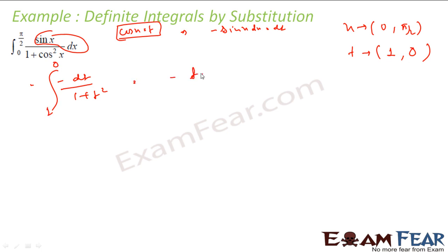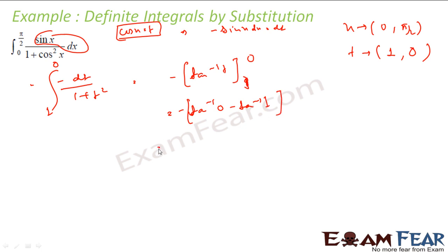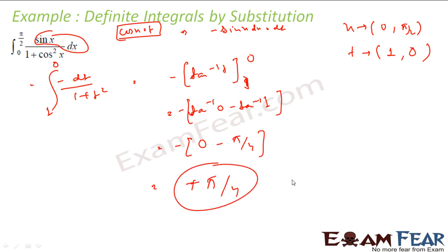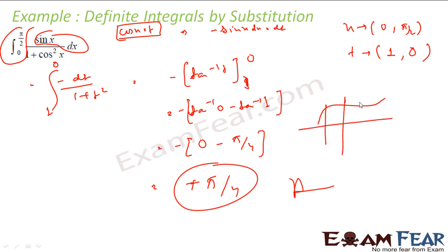So if we integrate, this is nothing but minus tan inverse t, evaluated from 1 to 0. This equals minus of (tan inverse 0 minus tan inverse 1), which is minus of (0 minus π/4), giving plus π/4. That is the answer. Also note that when you evaluate a definite integral, you don't get a constant part — because the limits are fixed, the result is always a fixed value.